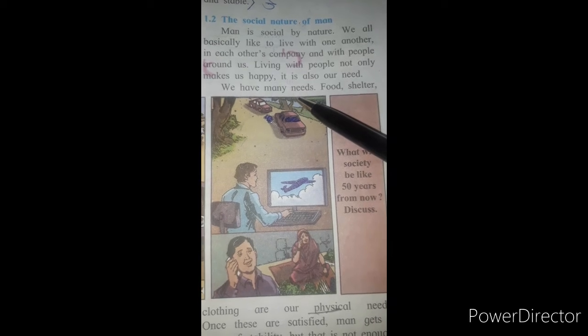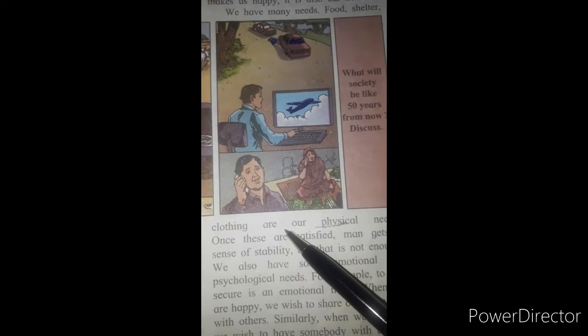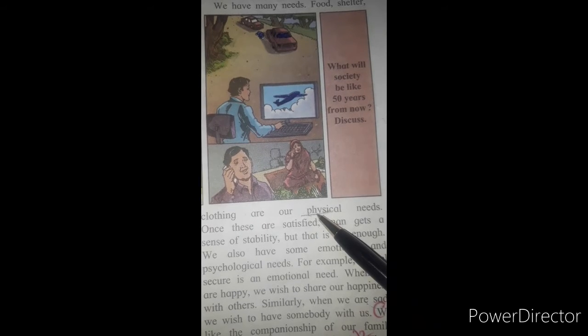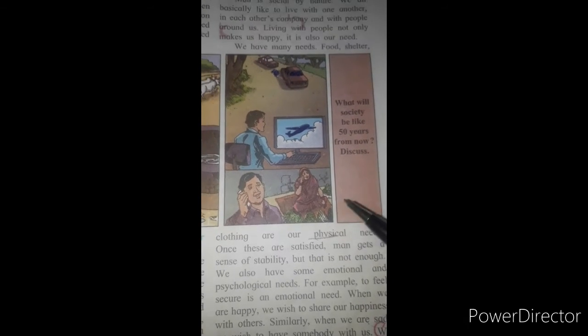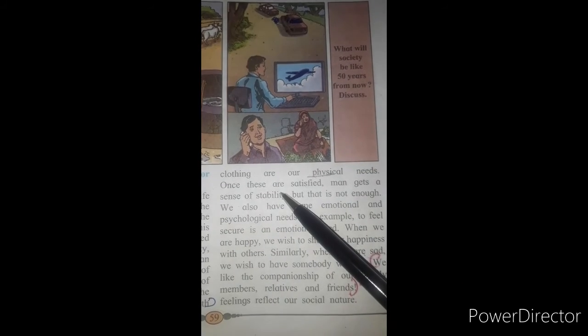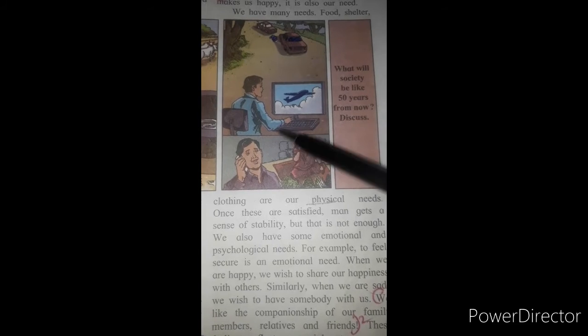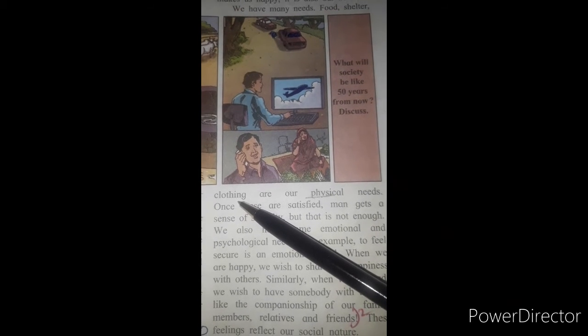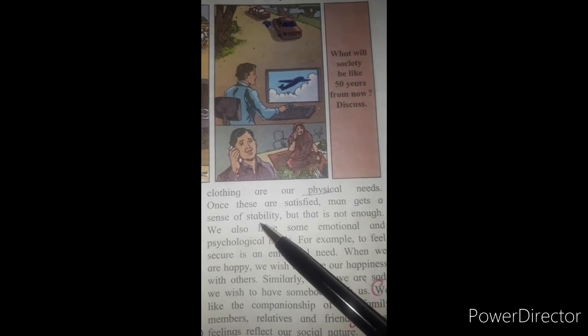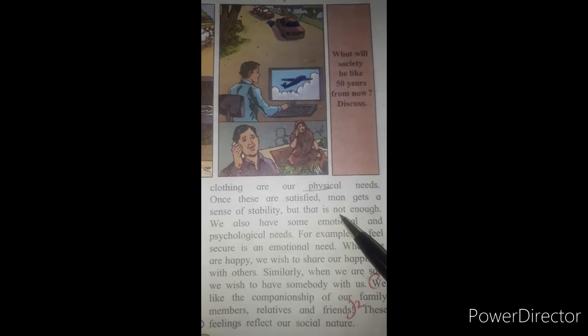We have many needs. Like food, shelter, clothing are our physical needs. Physical means our body needs food, shelter as well as cloth. Once these are satisfied, once we get food, shelter, clothing, what happens? We get satisfied. And man gets sense of stability. This means man becomes stable in life. But that is not enough. These things are not enough nowadays.